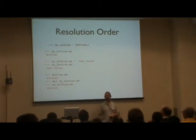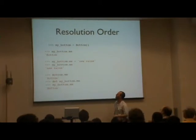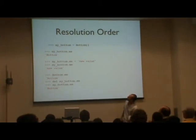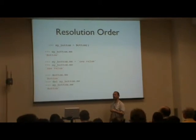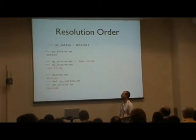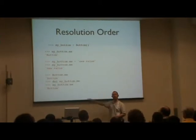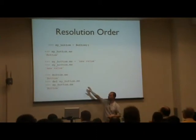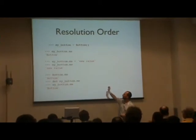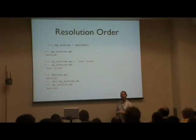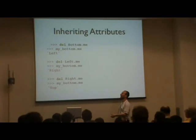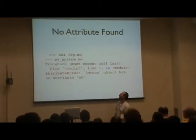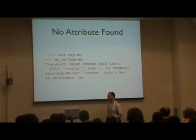This actually confused me for a while — I didn't quite understand the difference between class and instance variables in Python. I created an instance of Bottom and printed out the 'me' attribute. Then I overshadowed it: when you set instance.me, you're not actually replacing the class value — you're placing a new value on the instance. If you then delete the instance attribute, you go back to the class value; it's still there. And then I've gone up the tree — I delete the one in the Bottom class, I get Left; I delete the one in Left, I get Right; I delete the one in Right, I get Top; and when I delete the one in Top, I get an AttributeError, as you'd expect.